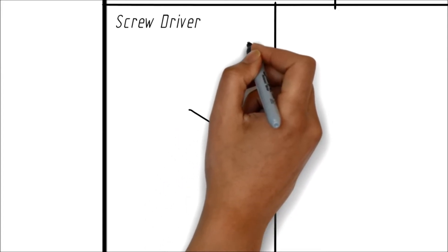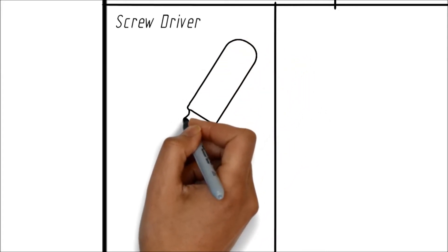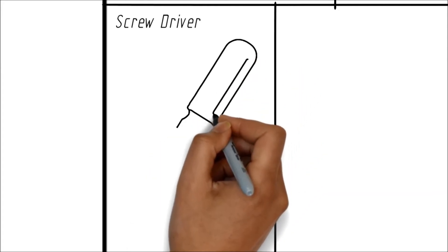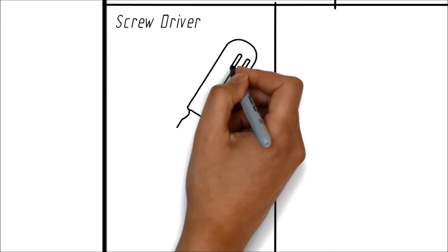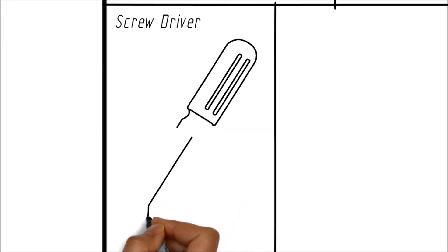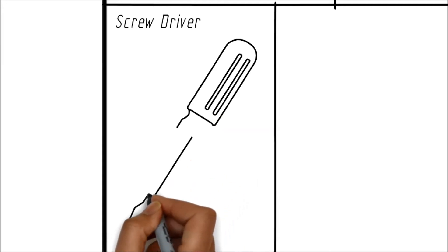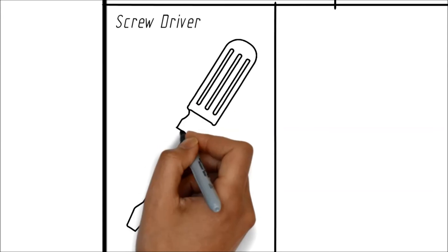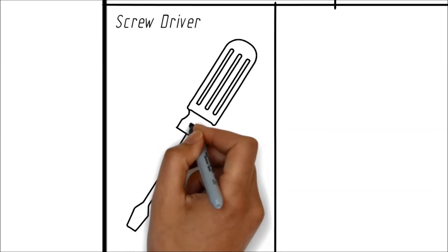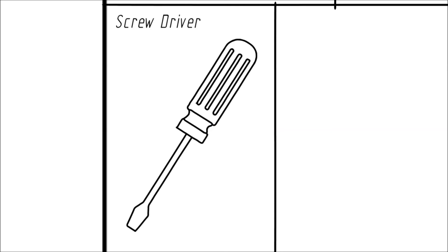The most commonly used hand tool is also a screwdriver. This is quite a simple screwdriver. Let us put the names to the various parts — this is the handle, the shank, and the blade.